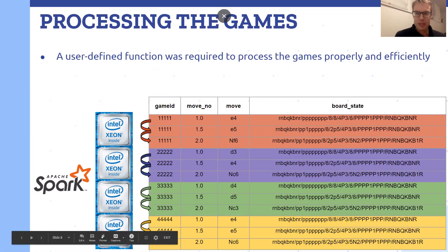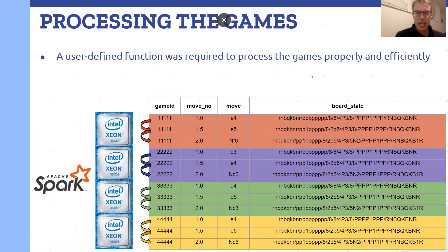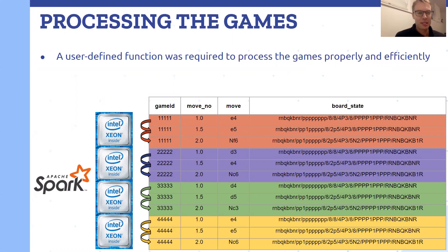Processing the games was a bit tricky because each game had to be done in the proper order so that the board configurations were correct, but I also did not want to loop through the entire 4-billion-row table — that would obviously not be efficient. So I ended up using a Spark user-defined function to process all the games in parallel but also in the proper order.